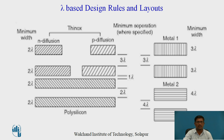Up to now we discussed the lambda rules using color code. Now the lambda rules and layouts using monochrome code: N diffusion is shown with cross lines; P diffusion has more widely spaced cross lines; polysilicon runs from left to right with crossing lines; Metal 1 has vertical lines; and Metal 2 has horizontal lines. The spacing dimensions remain the same as in the color code.